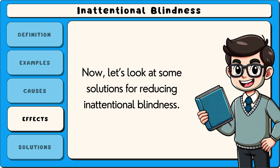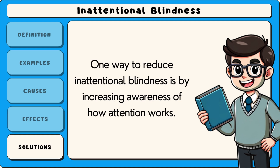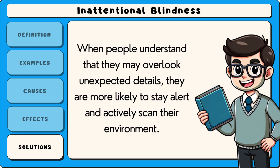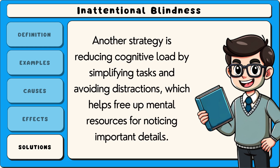Now let's look at some solutions for reducing inattentional blindness. One way is by increasing awareness of how attention works. When people understand that they may overlook unexpected details, they are more likely to stay alert and actively scan their environment. Another strategy is reducing cognitive load by simplifying tasks and avoiding distractions, which helps free up mental resources for noticing important details.